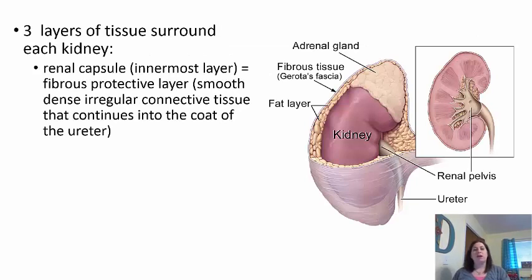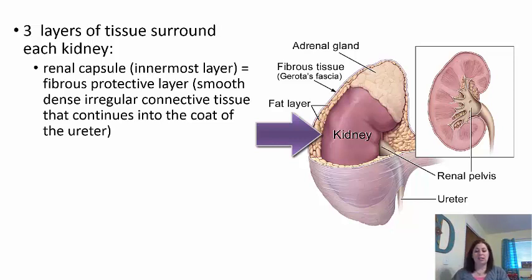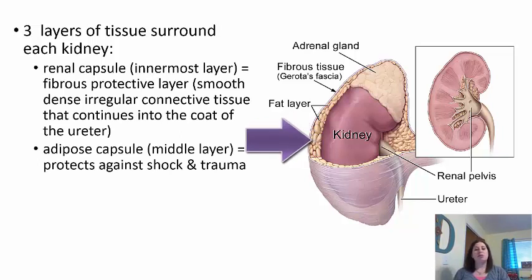There are three layers surrounding the kidney that help hold it in place, since it is not held by the peritoneum. The innermost layer is the renal capsule — a fibrous protective layer of smooth, dense, irregular connective tissue that continues into the coat of the ureter. The middle layer is the adipose capsule, which provides protection against shock and trauma, cushioning the kidney from impacts since you have one kidney on each side of the vertebral column.